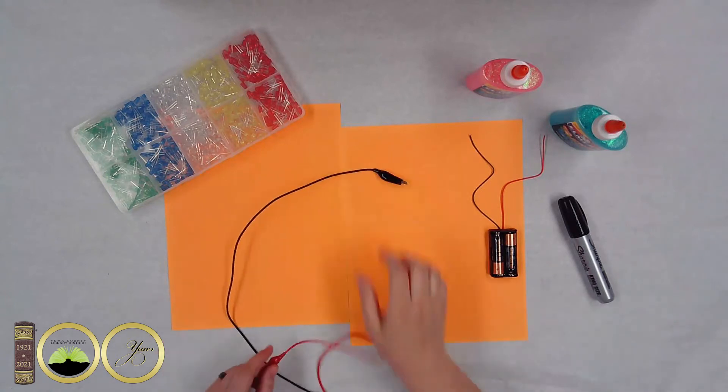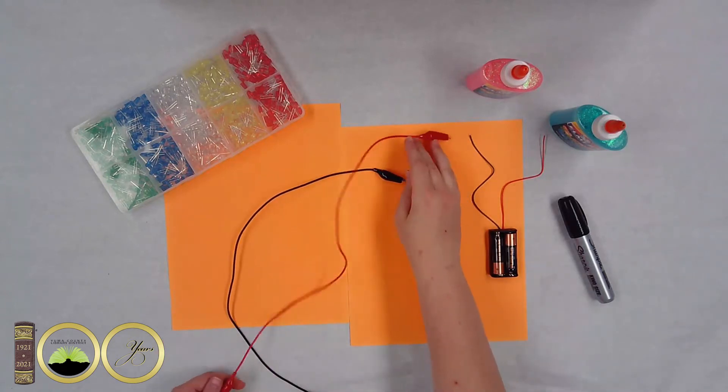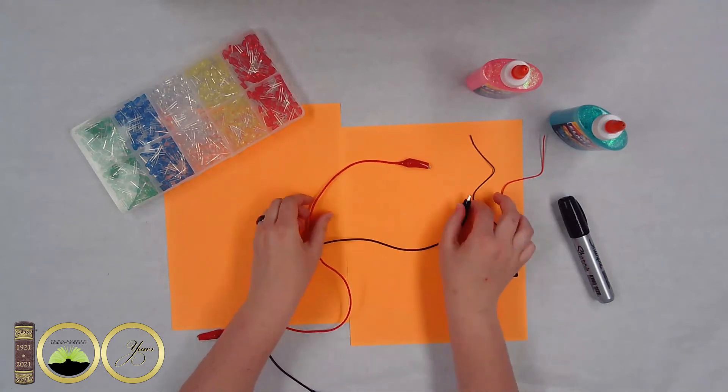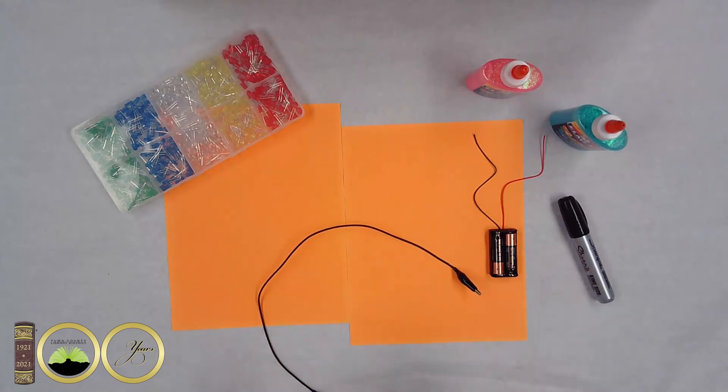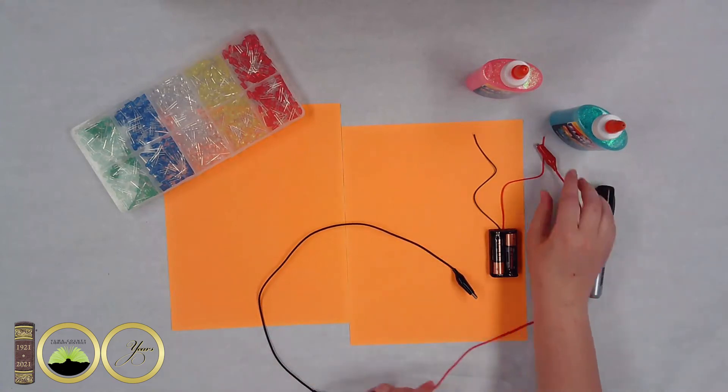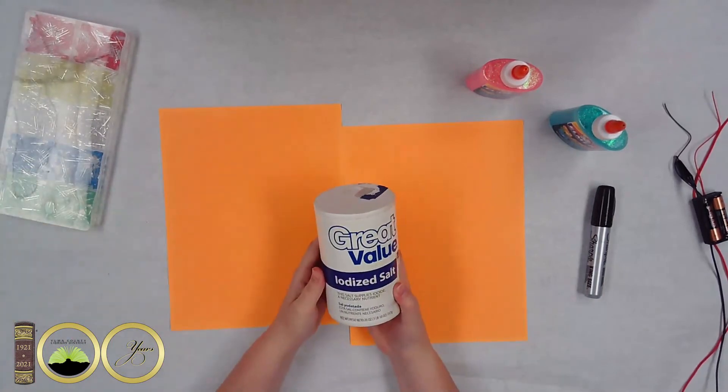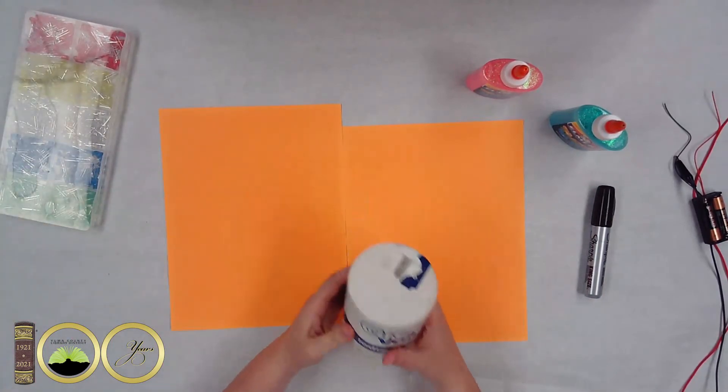And you'll need these alligator clips. So I used red and black to signify the negative and the positive. So the black will go to the black wire and the red will go to the red wire. You'll need to know this later for the instructions. Last but not least salt. We'll need that. That's going to bind our circuit together.